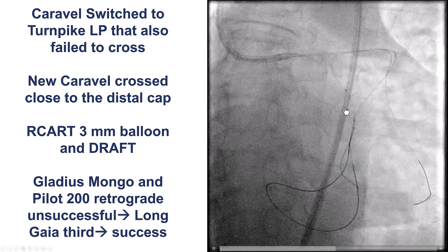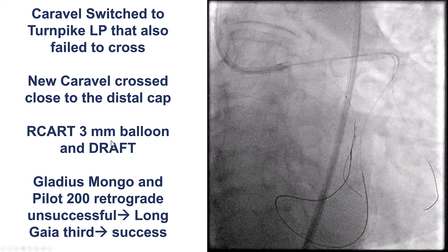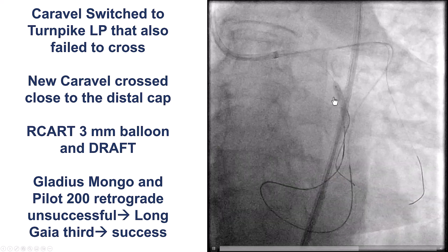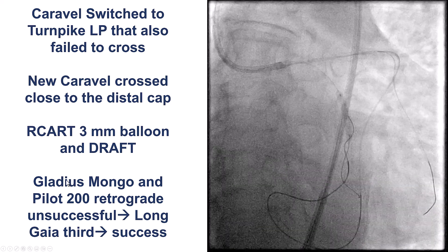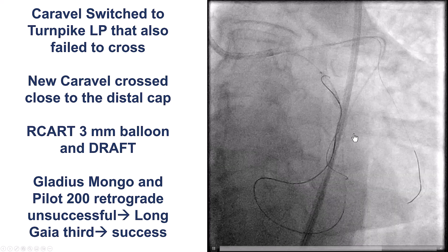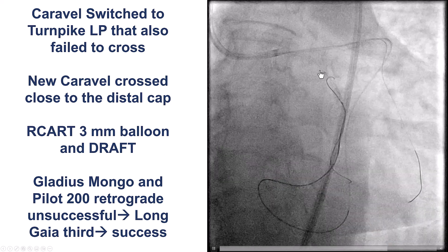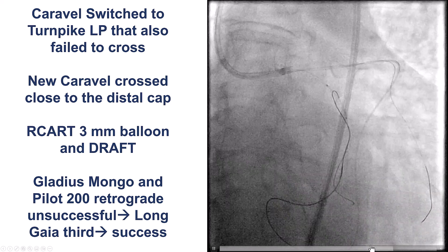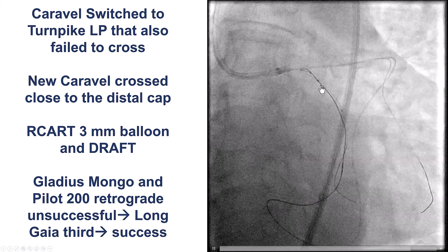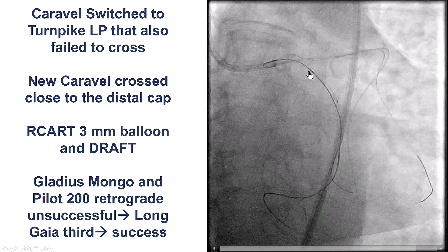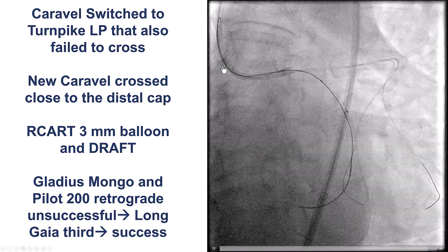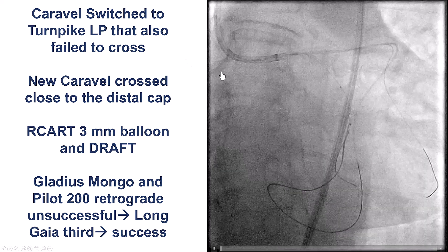We performed a reverse CART with a 3 mm balloon and the DRAFT technique — Deflate, Retract, and Advance into the Fenestration. We deflate the balloon, pull it back, and at the same time advance the retrograde guide wire. By doing that, we can see the retrograde wire jump into the antegrade guide catheter.